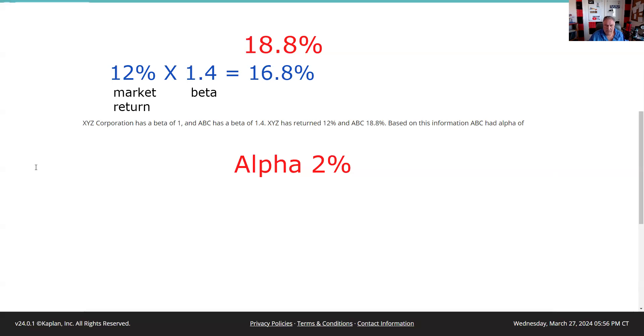Now this doesn't have the risk-free rate of return. And remember, risk-free rate of return is what we get without housing or risking our capital. So in this question, we don't have to deal with the risk-free return because it wasn't given.